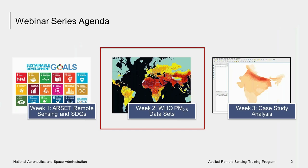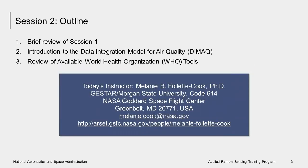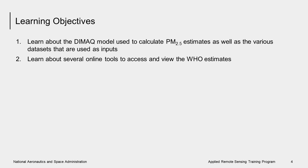This is week two of this three-week webinar series. Last week focused on the RSET program, an introduction to the SDGs, and a brief introduction to the fundamentals of remote sensing. This week, we'll discuss the PM2.5 estimates developed by the World Health Organization, or WHO. Next week, we'll conclude the webinar series with a case study in the analysis. The learning objectives for this week are to learn about the Data Integration Model for Air Quality, or DMAQ model, used to calculate the WHO PM2.5 estimates, as well as learn about the available tools on the WHO website.